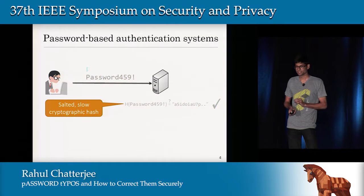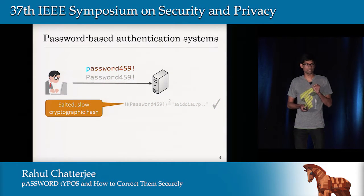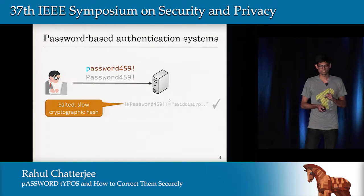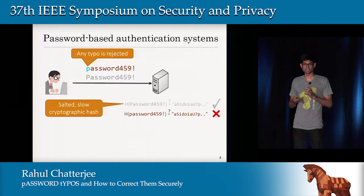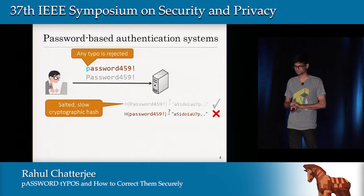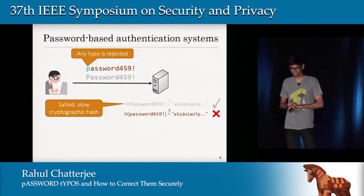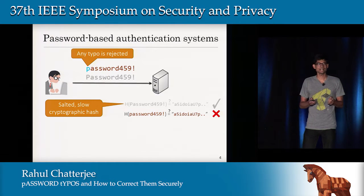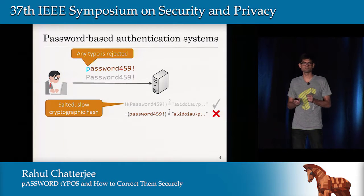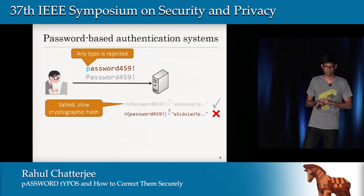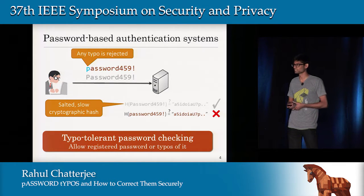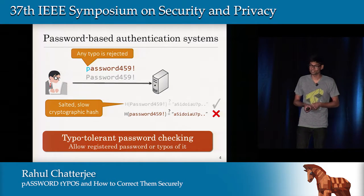Even if you make the slightest mistake in your password — such as forgetting to capitalize the first letter — the output of the hash function will be different, and the login will fail. Now, this is annoying. Wouldn't it be good if the server allowed some small typos that users frequently make while typing their passwords? This intuition leads us to construct a new type of password checking, what we call typo-tolerant password checking.